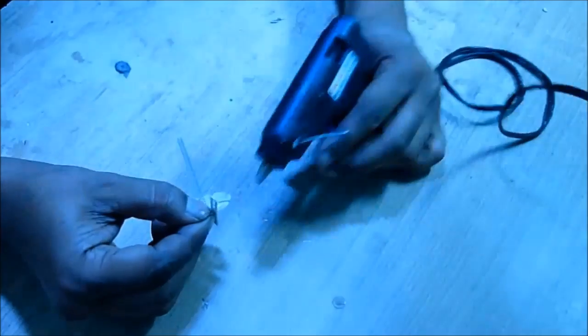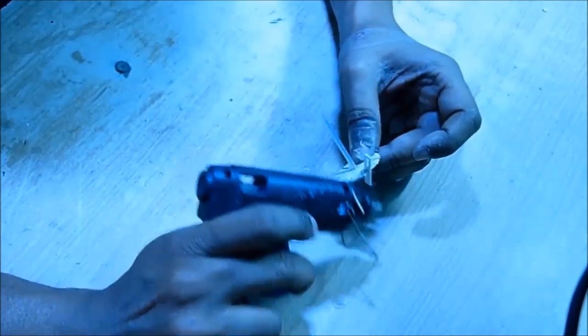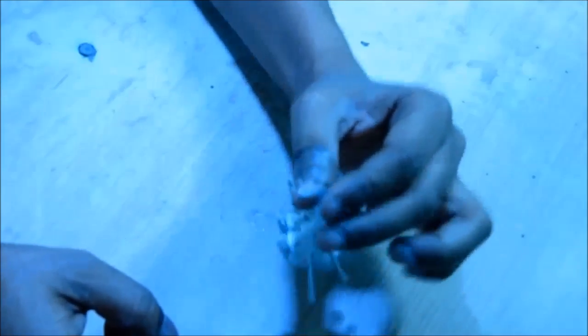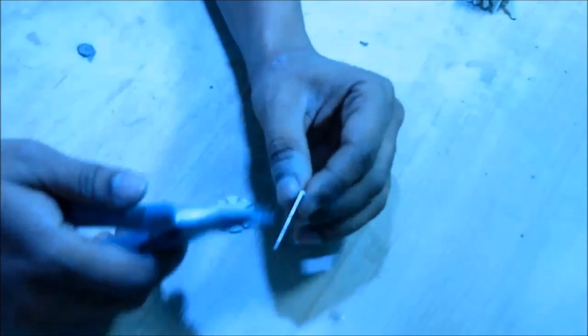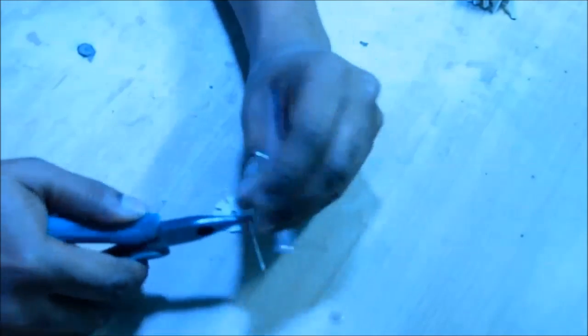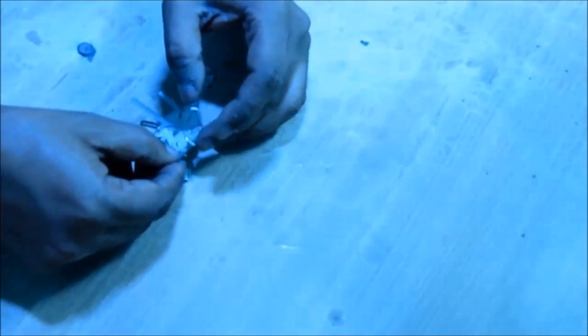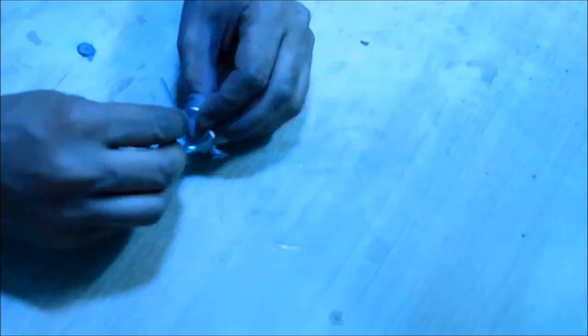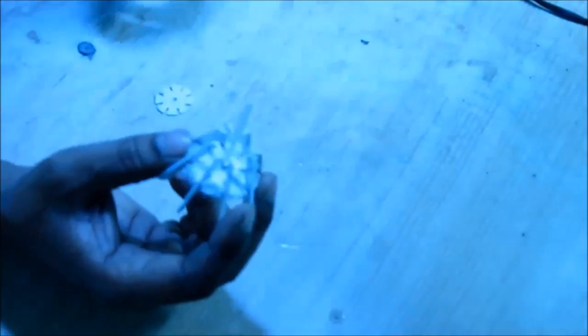With each leg like that, you glue all the eight legs. Now once done, you have to make a ring from a wire from a safety pin like this. Take the ring, pass through the slot of all the legs, and then put back the small wheel.